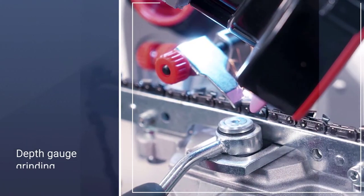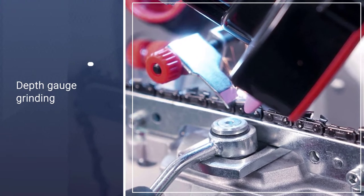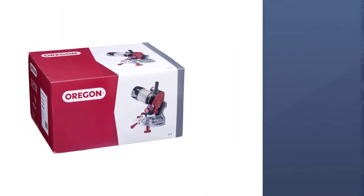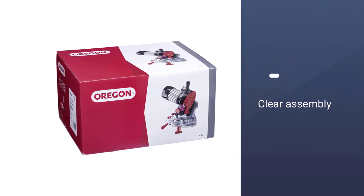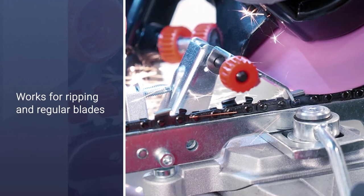With this machine, you get three grinding wheels with a diameter of 5.75 inches, configured to sharpen any 1 quarter, 3 eighths, low profile, 0.325, 3 eighths, and 0.404 pitch chains.